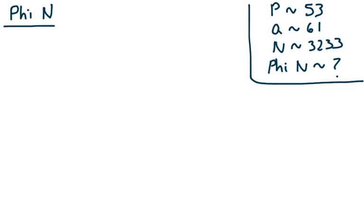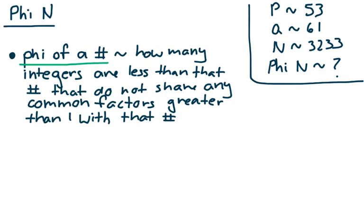Now finding Phi of N is where things start to get a little complicated. The phi of a number tells you how many integers are less than that number that do not share any common factors greater than 1 with that number. This sounds pretty convoluted, so let's work through an example to understand it better.